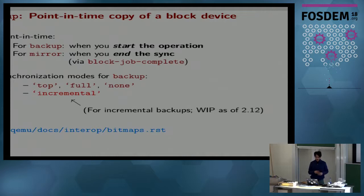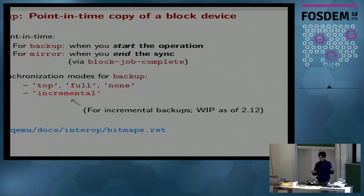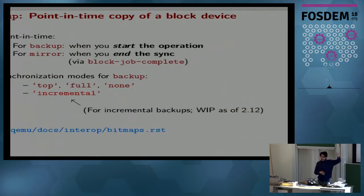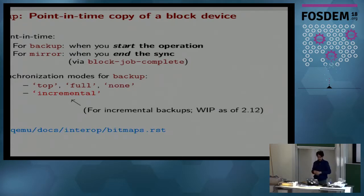This is the last primitive — the backup command. It's a bit similar to mirror. For mirror, the point-in-time of a copy is when you end the synchronization of disks on the source by issuing the blockjob complete command. For backup, the point-in-time is when you start the operation. Upstream is thinking to merge most of these into a couple of common commands, but at the moment they seem a bit similar. The interesting thing about backup is it has an extra synchronization mode: along with copying the entire chain and so forth, it also offers an incremental flag useful for incremental backups. There was a talk at KVM Forum last year with more details.